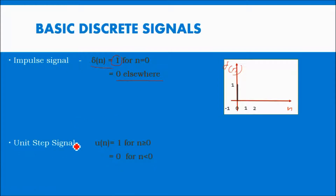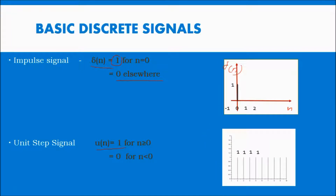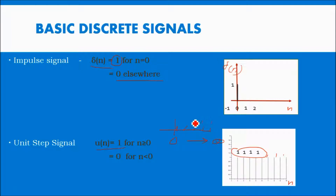The second signal is the unit step signal, represented as u of n, whose value is 1 for n greater than or equal to 0. From 0 till infinity the values are all 1, and below 0 all values are 0. That is called u of n.